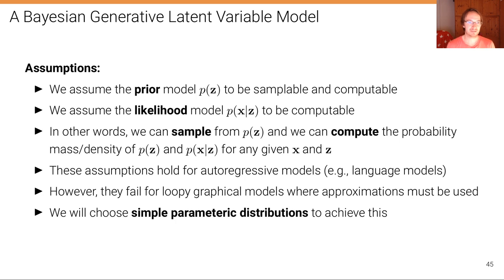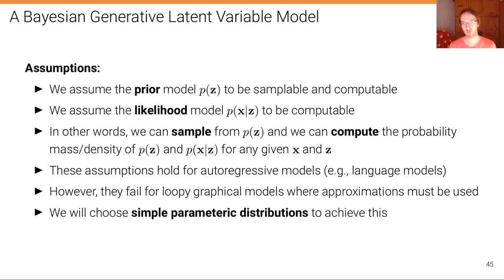To develop this model we make some assumptions needed for tractability. We first assume that the prior model P of C is sampleable and computable, and that the likelihood model P of X given C is also computable. This means we can draw samples from P of C and we can compute the probability mass or density of P of C and P of X given C for any given X and C.